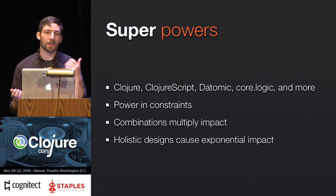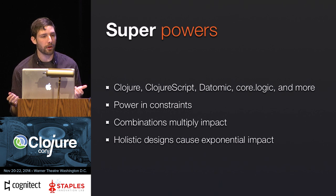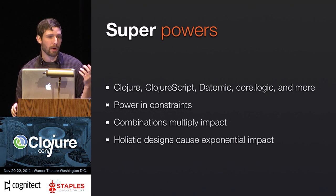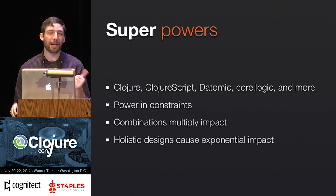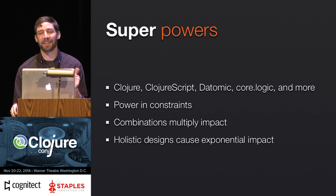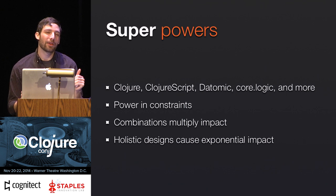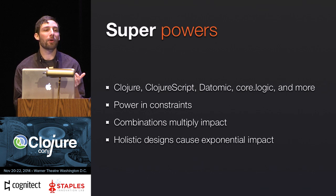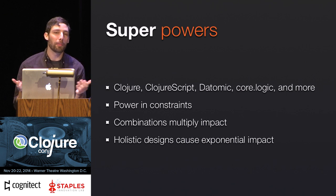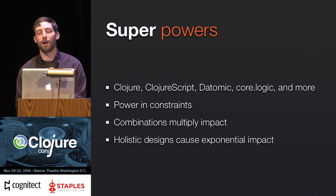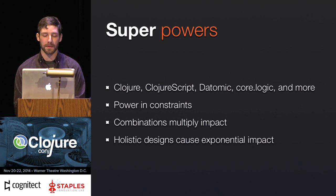If you just have drums and bass and guitar, you don't have a song — you have a lot of chaotic noise. But once they start becoming harmonious, once they start playing together, you have a beautiful band or a beautiful song. A good design is holistic in that same sense. So what steps did we actually take to be data-driven? How did we work through the design?